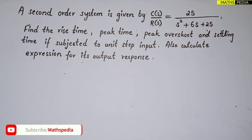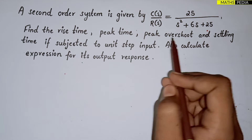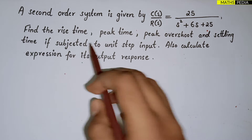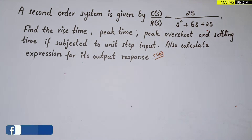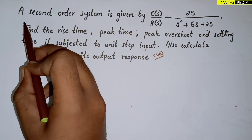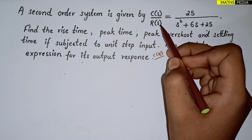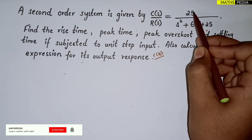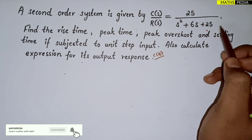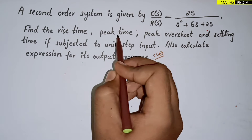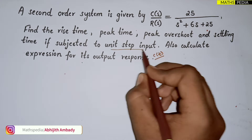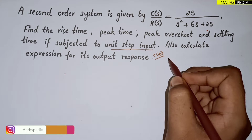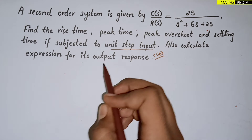In this video we are going to discuss problems based on rise time, peak time, peak overshoot, settling time, and the output response c(t). The question here is: a second order system is given as C(s)/R(s) transfer function equal to 25 divided by (s² + 6s + 25). We have to find the rise time, peak time, peak overshoot, and settling time if subjected to unit step input, and also calculate the expression for its output response c(t).